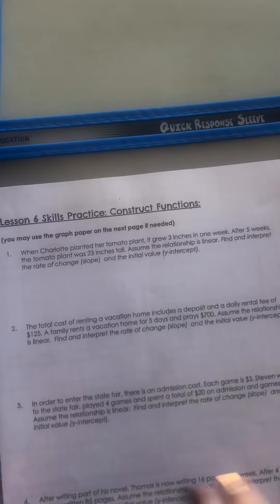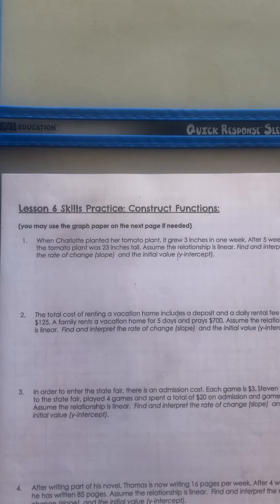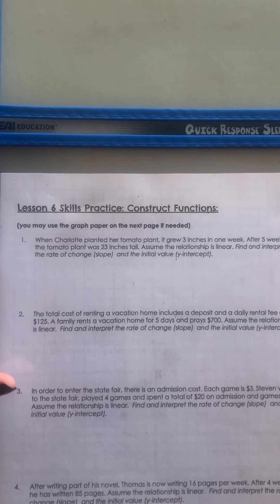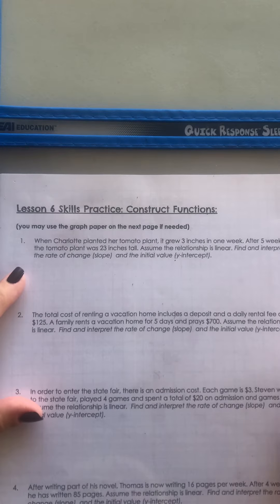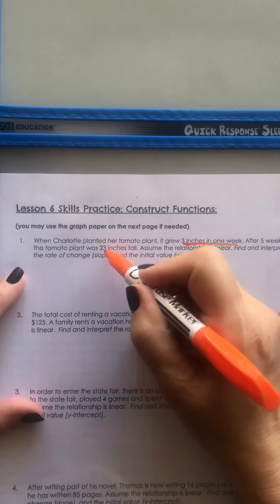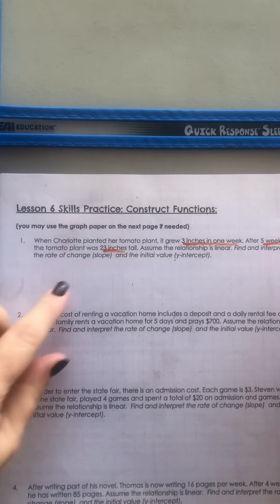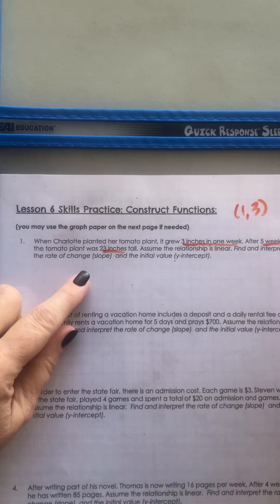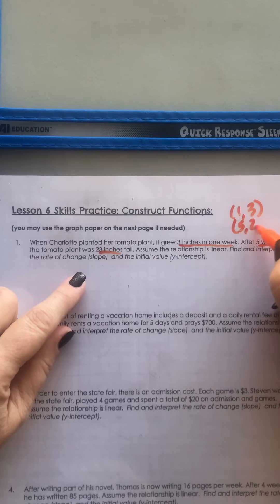The next section is constructing functions. The first problem says: when Charlotte planted her tomato plant, it grew three inches in one week. And after five weeks, the tomato plant was 23 inches tall. So we have two points — in one week it grew three inches, and in five weeks it grew 23 inches.